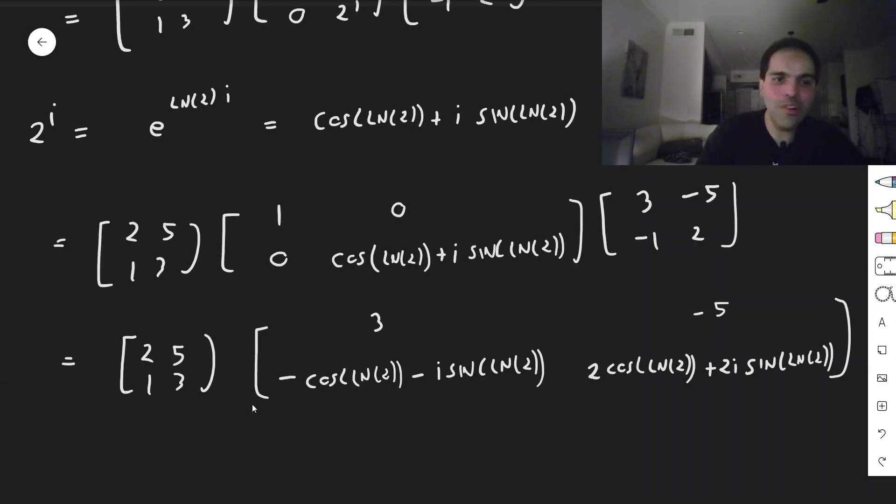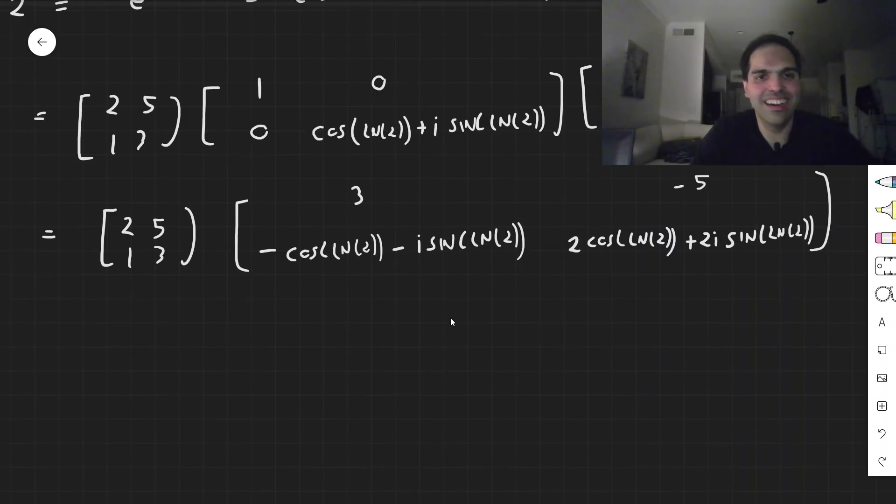But wait, there's more, because you also have to multiply this out. Makes me think, I should have just written 2 to i, would have been easier. But anyway, okay, and then what do we get?